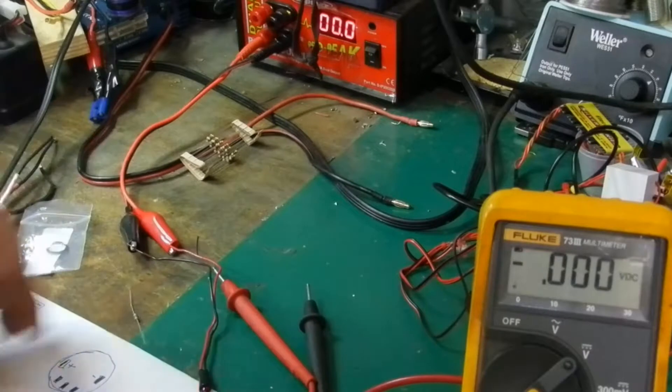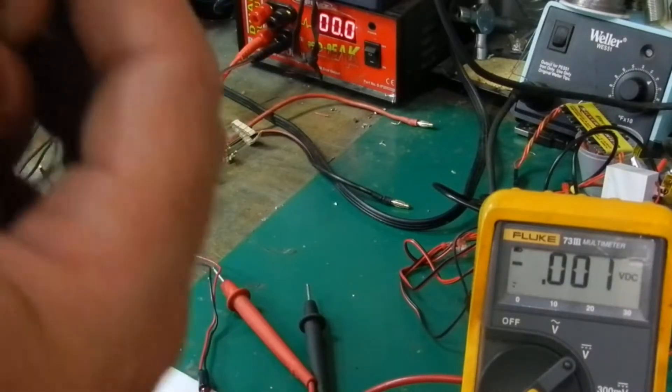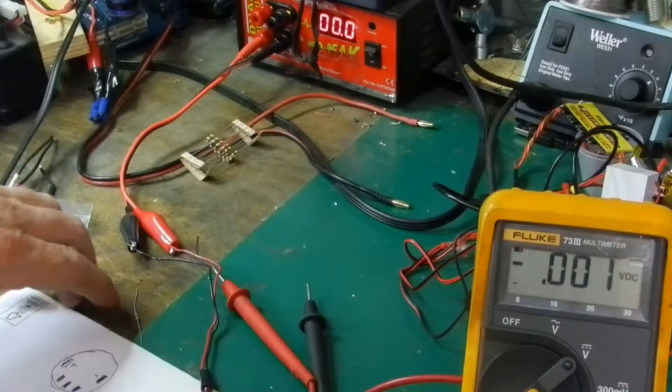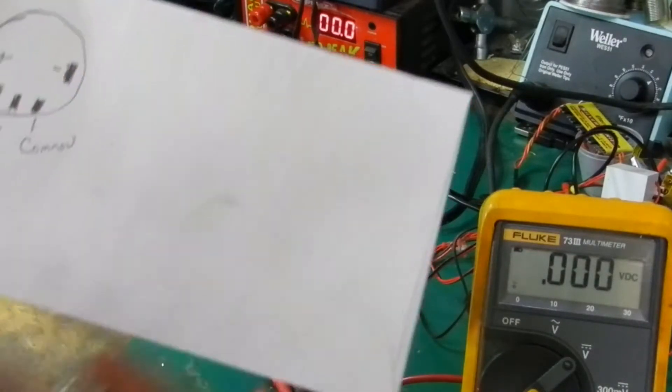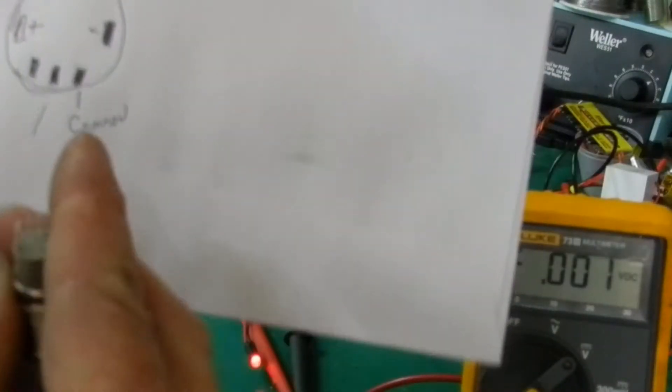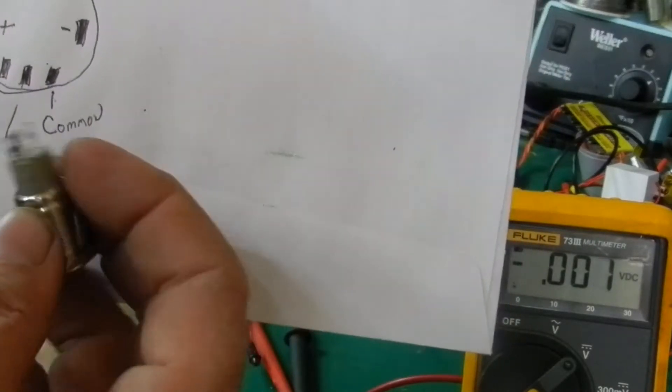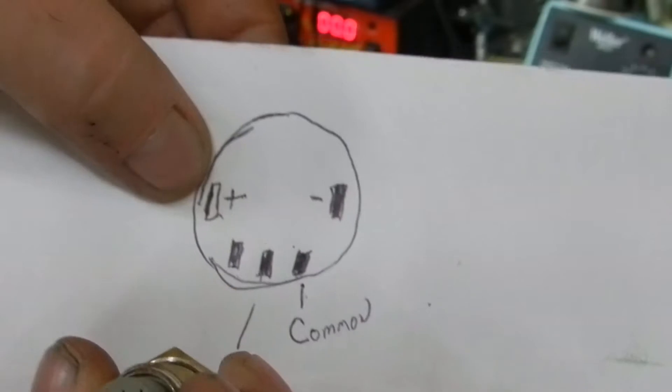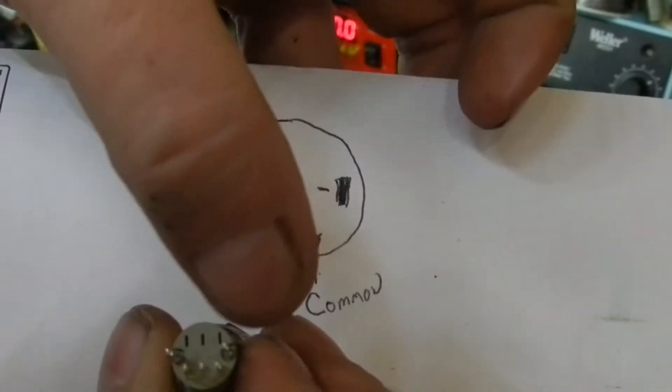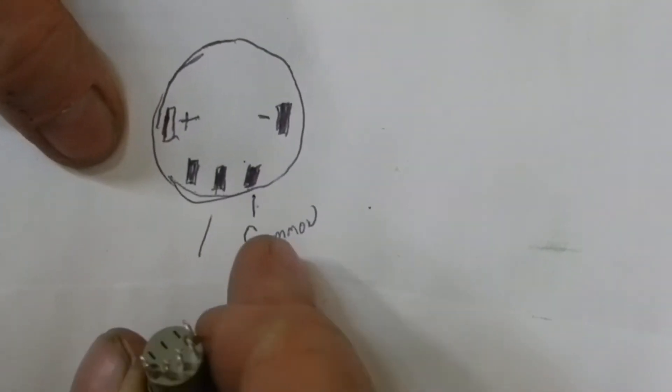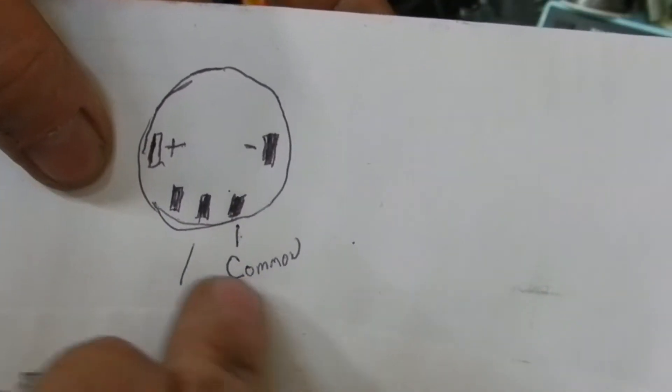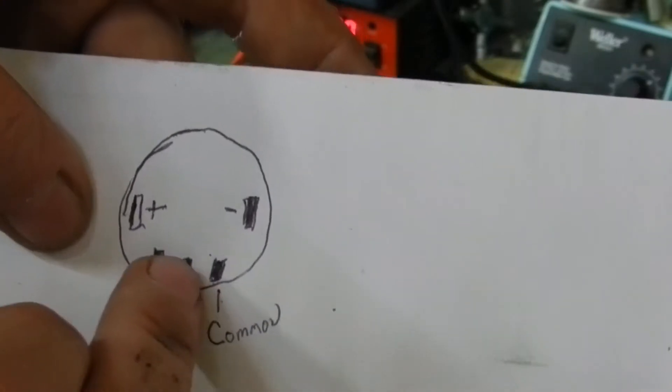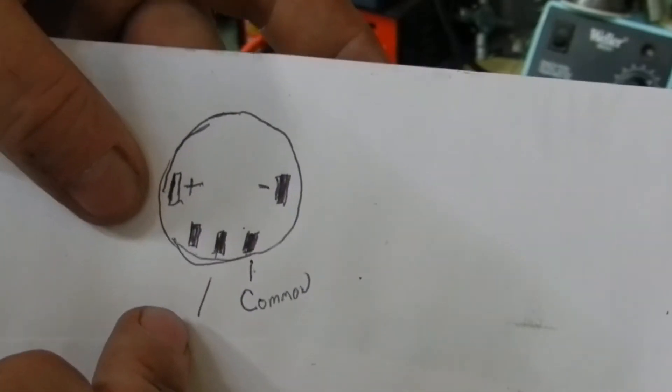So the first thing you want to do is figure out what all these pins do, and it's pretty simple. You can see the marks here because you can't see them on here. On the back of this, there's a positive, a negative. The negative is over here. And then you're going to have three right here on the bottom. One is a common. I'll explain all this here in a minute. And then one is a normally open, and one is a normally closed.